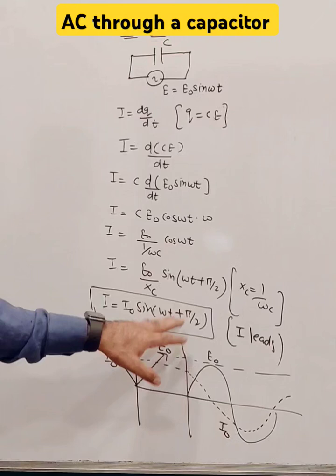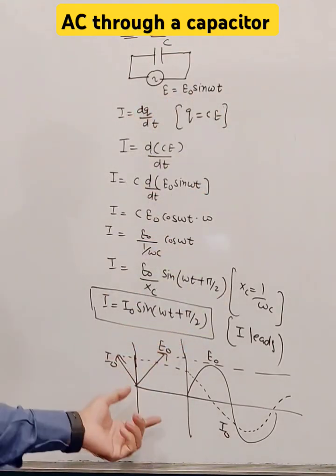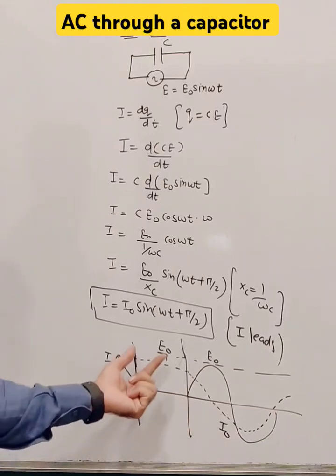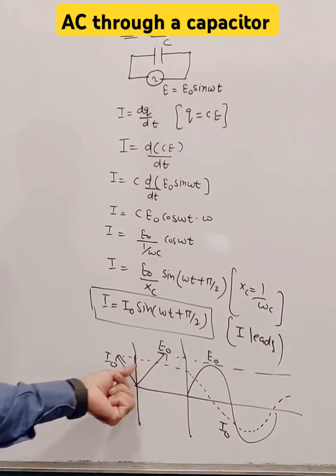So it means the current leads by pi by 2 to the voltage E equals E naught sine of omega t. So the phasor diagram or waveform, the E naught is at an angle omega t and I naught is omega t plus pi by 2.